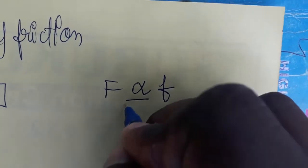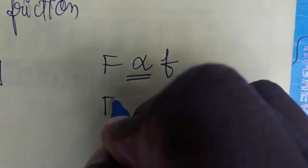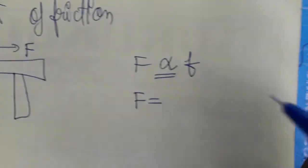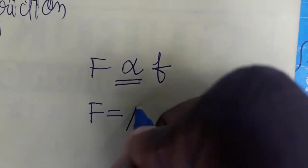When we remove the proportionality, applied force equals μ times f. We can call it the reactional force also. μ is equal to F by f - applied force divided by friction force.